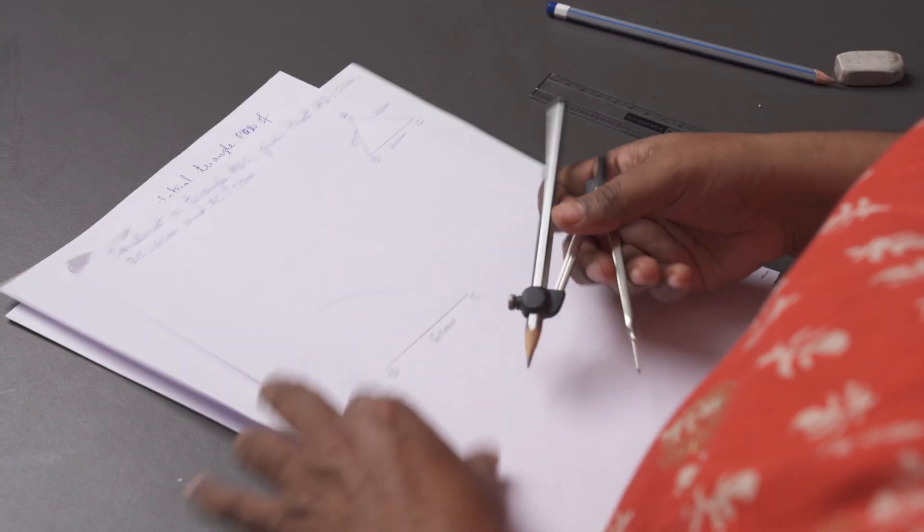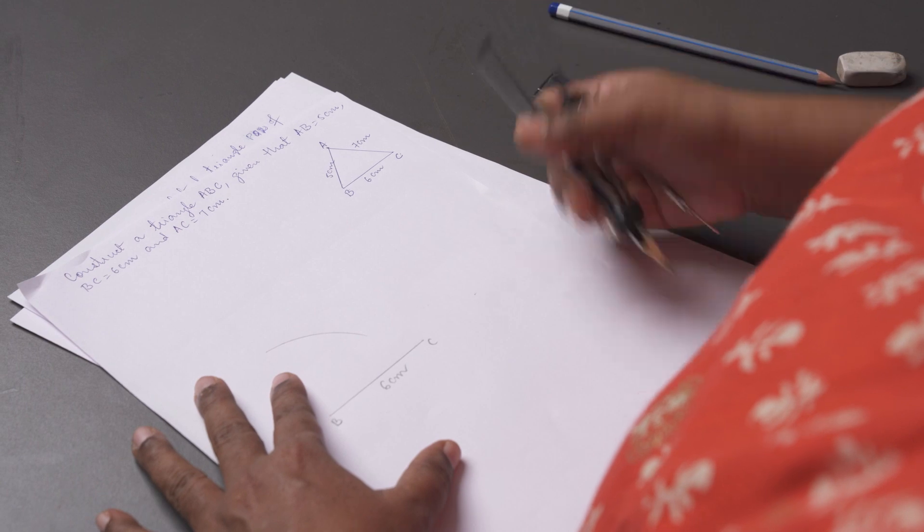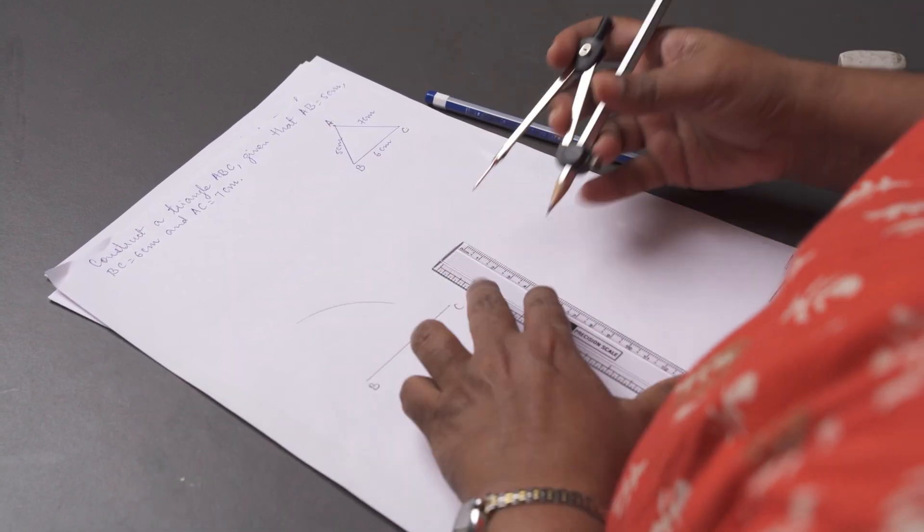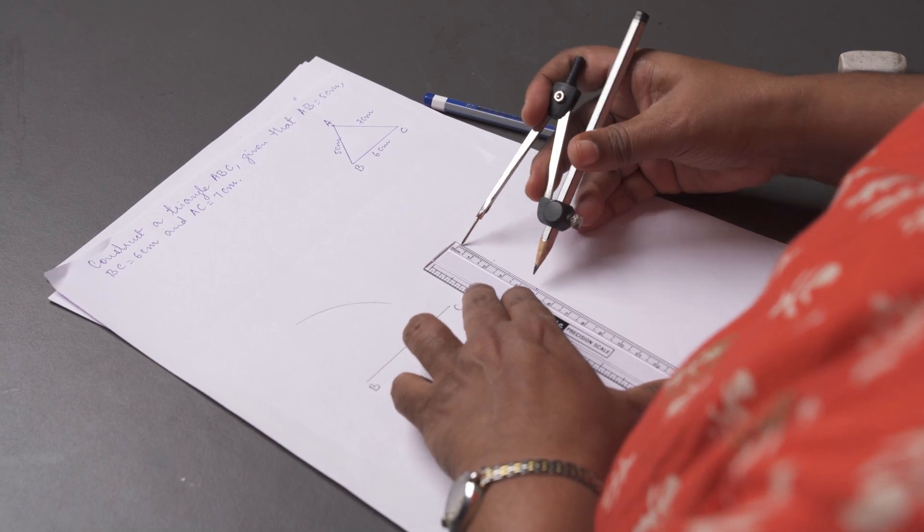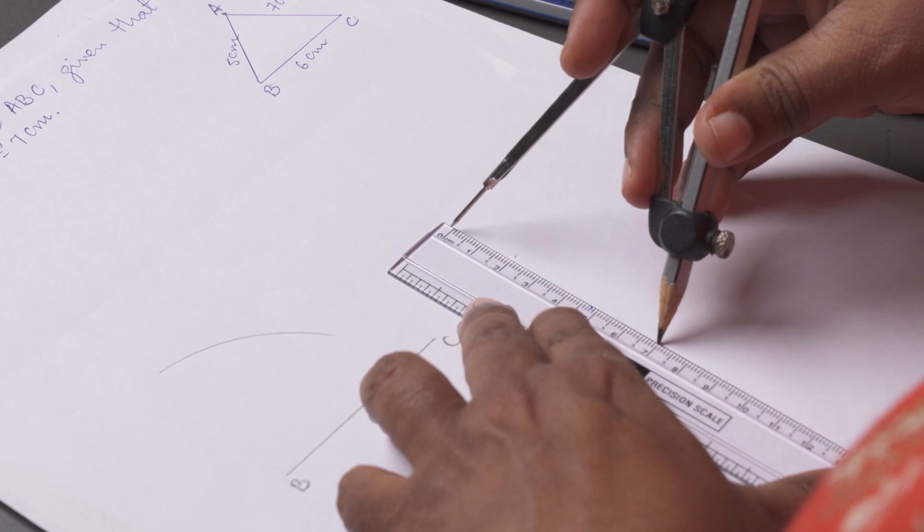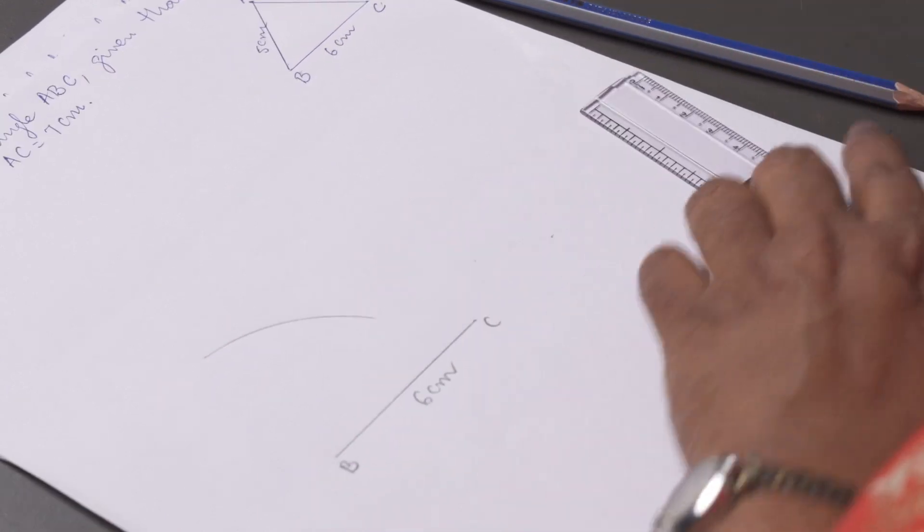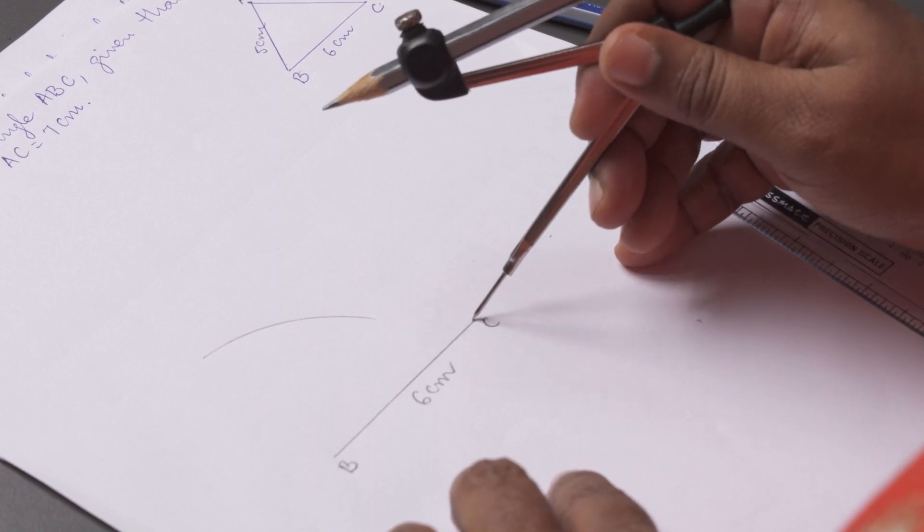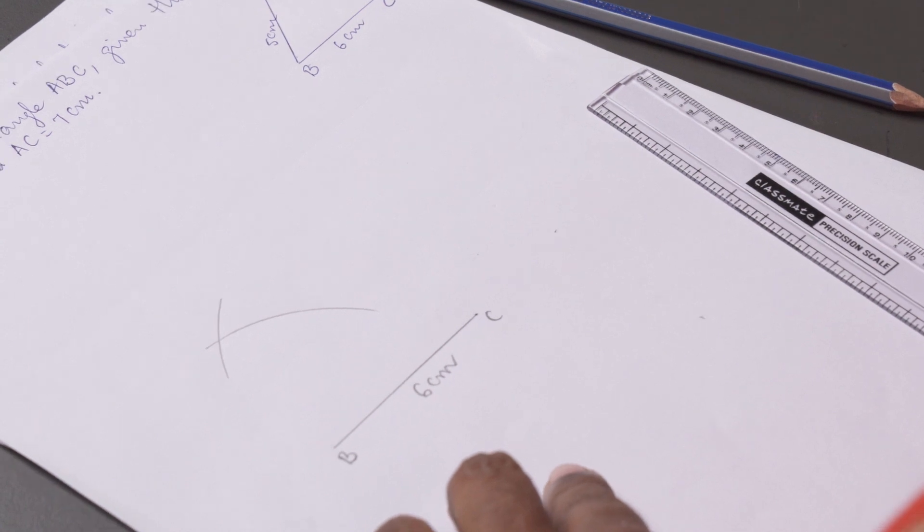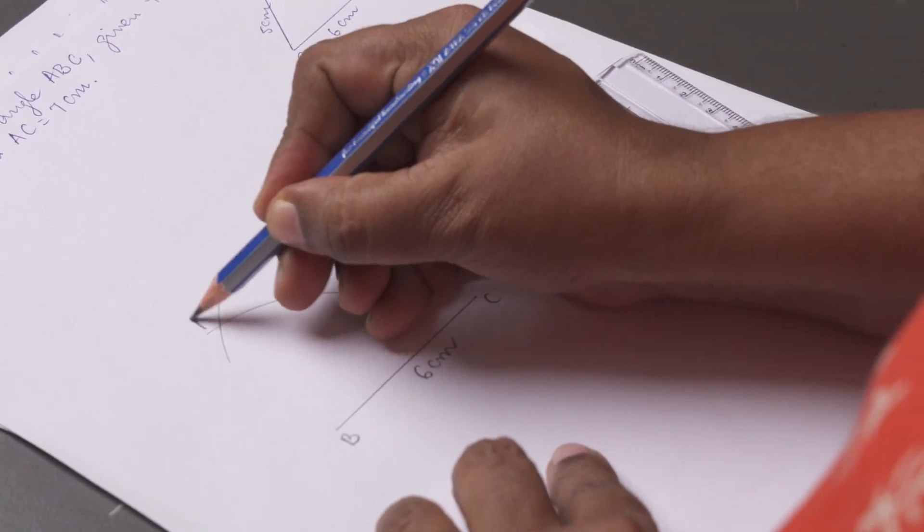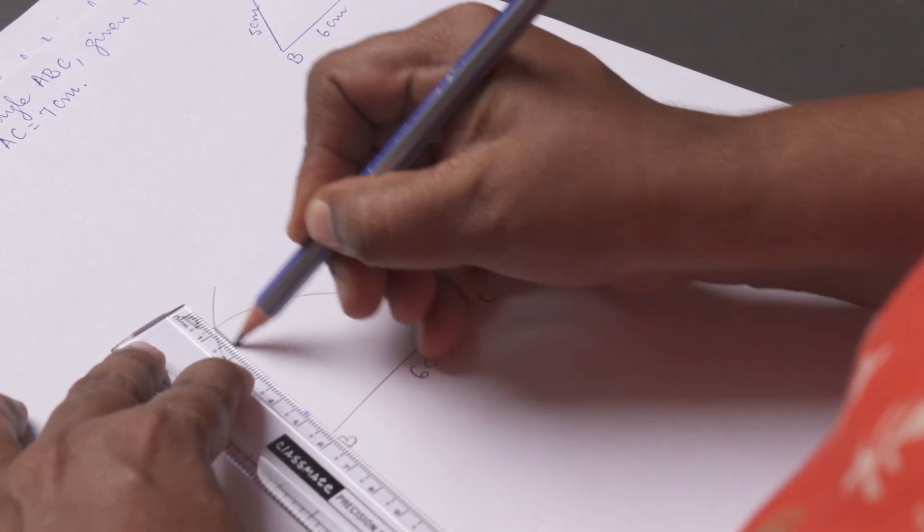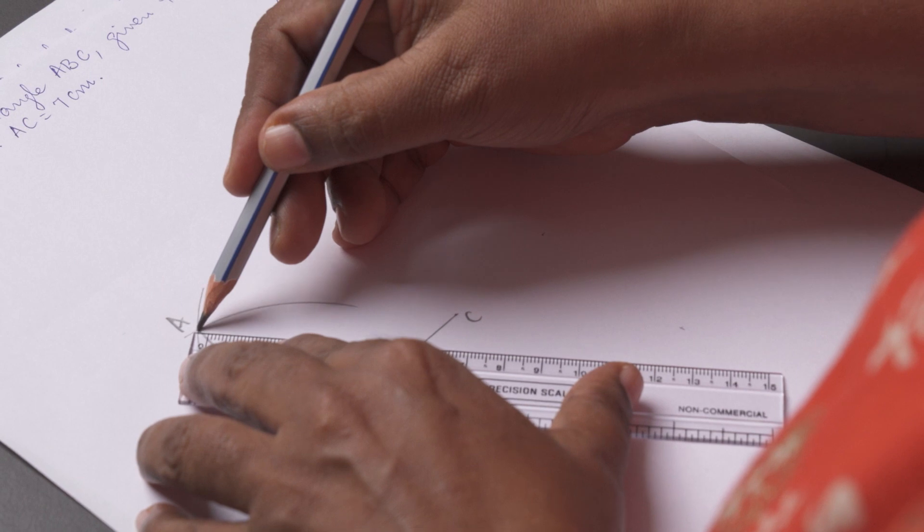Now, to draw AC of 7 cm, take a pair of compasses of radius 7 cm. Place it at C, and draw an arc to intersect the previous arc. Mark this point of intersection as A, join AB and AC.